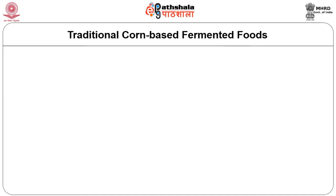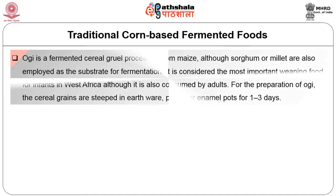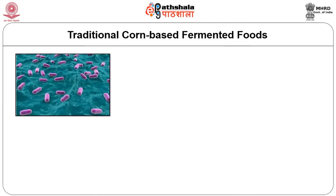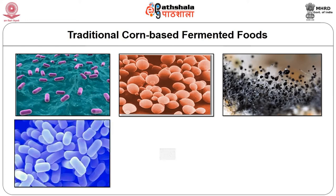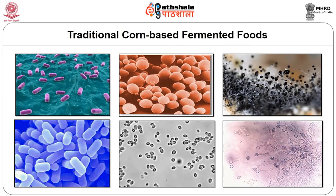Now we will see traditional corn-based fermented foods. Ogi is a fermented cereal gruel processed from maize, although sorghum or millet are also employed as the substrate. It is considered the most important weaning food for infants in West Africa. For the preparation of Ogi, the cereal grains are steeped in earthenware, plastic or enamel pots for 1 to 3 days. Lactic acid bacteria, yeast and molds are responsible for fermentation, although Lactobacillus plantarum is the predominant microorganism. Other bacteria such as Corynebacterium hydrolyze the cornstarch, and Candida species also contribute to flavour development.